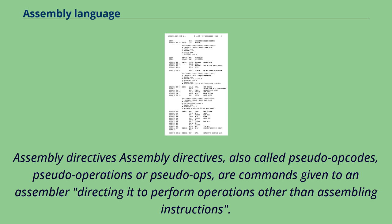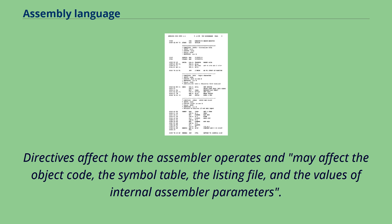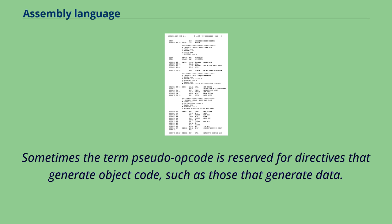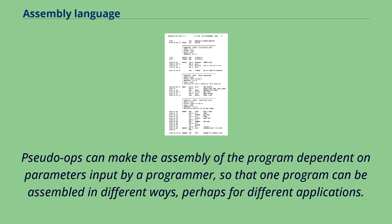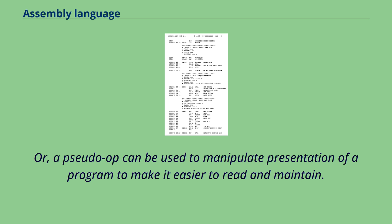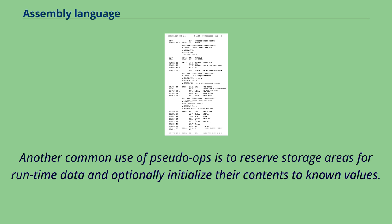Assembly directives, also called pseudo-opcodes, pseudo-operations or pseudo-ops, are commands given to an assembler directing it to perform operations other than assembling instructions. Directives affect how the assembler operates and may affect the object code, the symbol table, the listing file, and the values of internal assembler parameters. Sometimes the term pseudo-opcode is reserved for directives that generate object code, such as those that generate data. The names of pseudo-ops often start with a dot to distinguish them from machine instructions. Pseudo-ops can make the assembly of the program dependent on parameters input by a programmer, so that one program can be assembled in different ways. Another common use of pseudo-ops is to reserve storage areas for runtime data and optionally initialize their contents to known values.